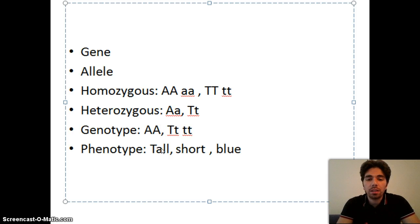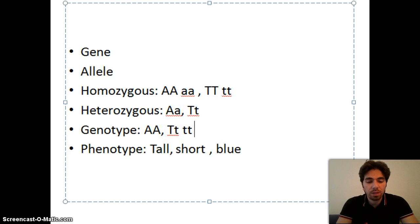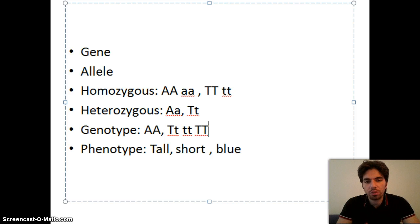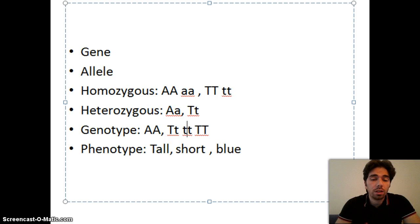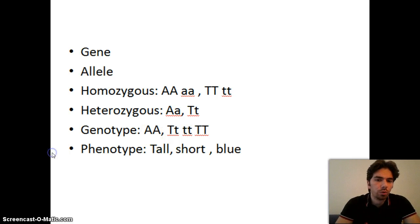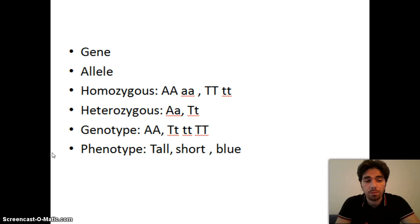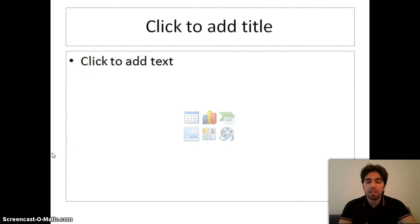Phenotype is what appears on the outside based on the genotype. If asked for the phenotype, you answer in words: tall, short, blue eye color, etc. When you have a phenotype, you can't be certain of the genotype — a tall plant might be big T small t or big T big T. But when you have the genotype, you can determine the phenotype if you know which allele is dominant and which is recessive.